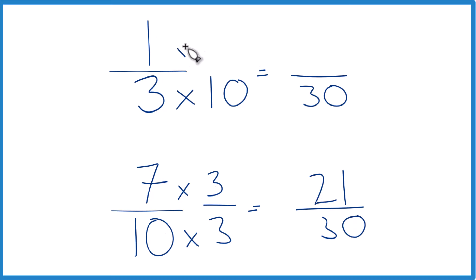Up here, let's multiply by ten. One times ten is ten. Now we have the same denominators, we're just going to compare these numerators, and you can see that twenty-one is larger than ten. Twenty-one-thirtieths is larger than ten-thirtieths. Since these are equivalent, seven-tenths is larger than one-third.